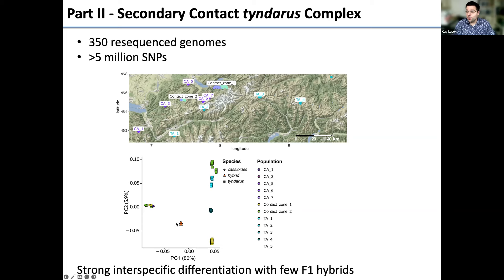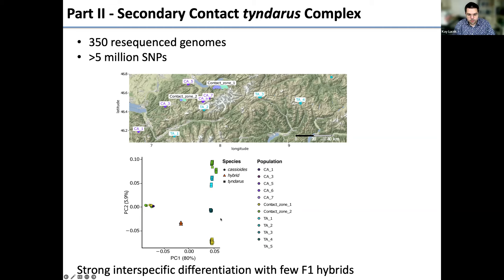There's more genetic variation within Tindarus, showing considerable population structure. Running ADMIXTURE — individual-based assignment analysis — each bar is an individual colored by genomic contribution. We have 100% Cassioidus individuals and 100% Tindarus individuals, and the two F1 hybrids are 50/50. We see very strong inter-specific differentiation with only a few F1 hybrids — not what we initially predicted looking at the contact zones.